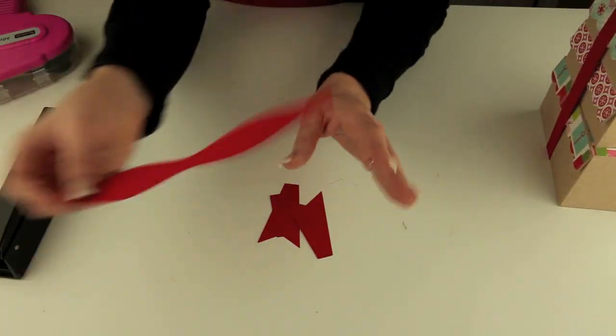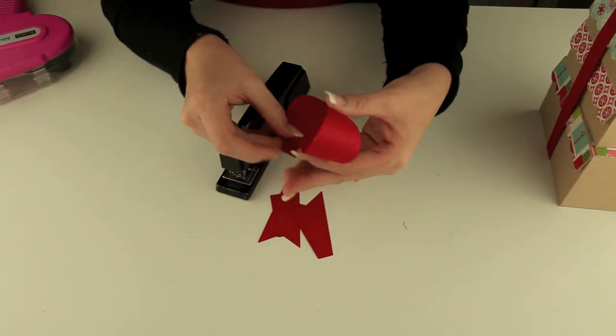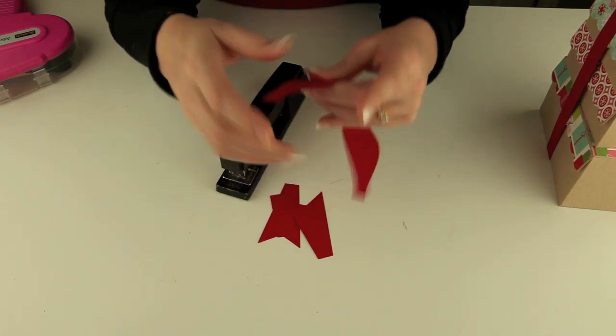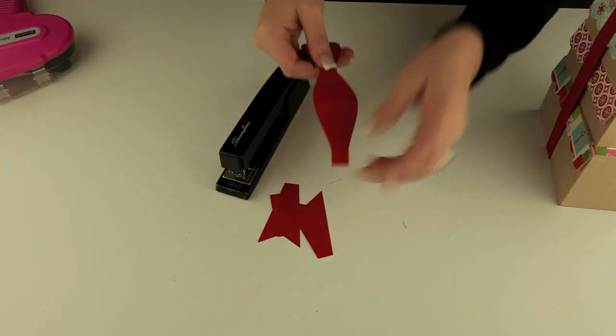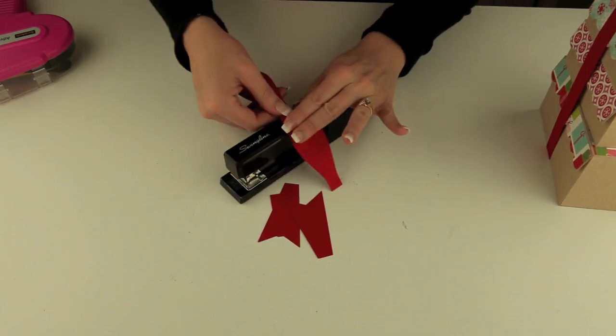So this is how the bow is formed. You're going to need a stapler for this. Just go ahead and fold. You're going to want to kind of curve. In fact I used the edge of my table. I can't show that on the screen so I'll just use the edge of the stapler here.